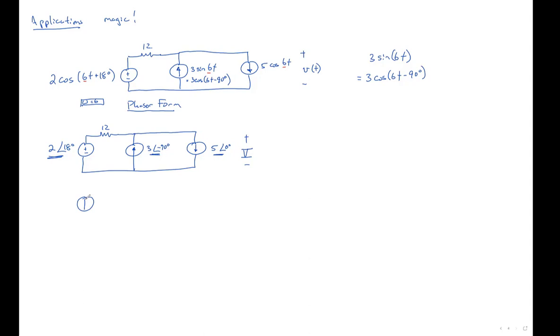So the source transform, let's see the plus is on the top. So we'll have to draw the arrow on the top. By Ohm's law, we're going to divide 2 at an angle of 18 by 12. And you already know how to do that. That's just one sixth at an angle of 18 degrees. Whoops. We've got a 12 over here.